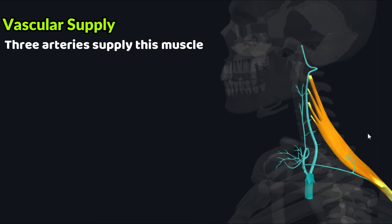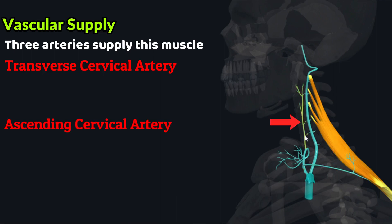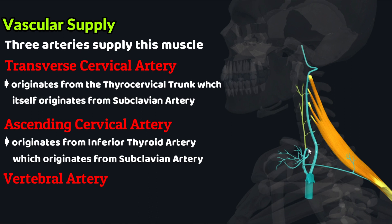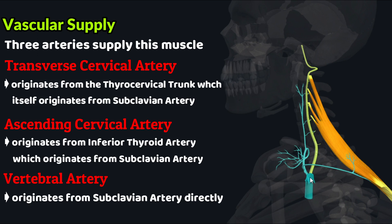Three arteries supply the levator scapulae muscle: the transverse cervical artery, the ascending cervical artery, and the vertebral artery. The transverse cervical artery originates from the thyrocervical trunk, which originates from the subclavian artery. The ascending cervical artery originates from the inferior thyroid artery, which also originates from the thyrocervical trunk from the subclavian artery. The vertebral artery directly originates from the subclavian artery.